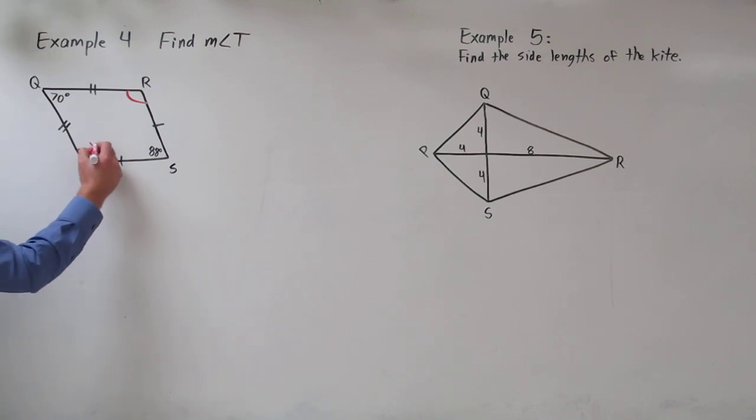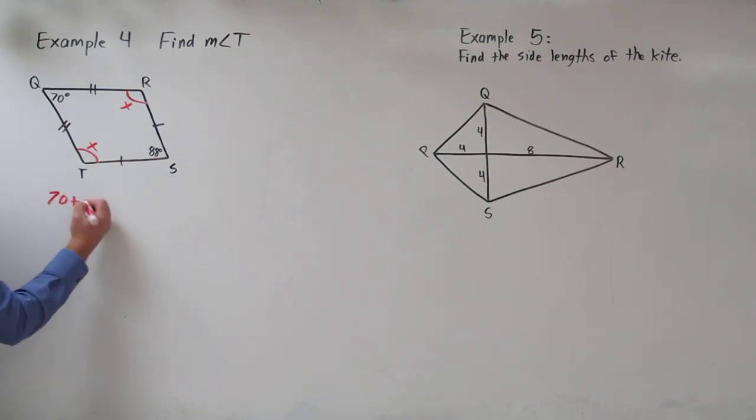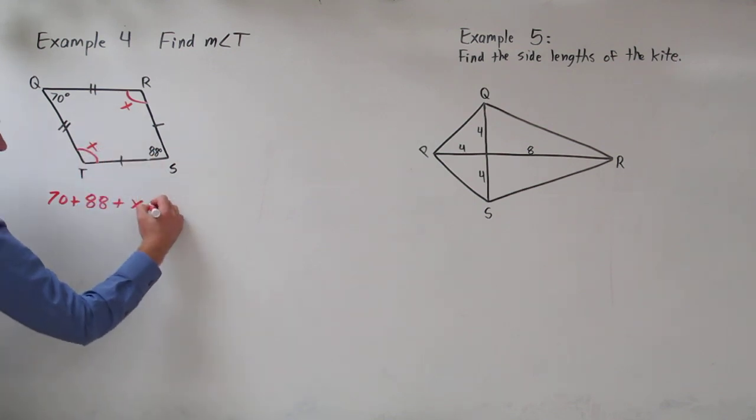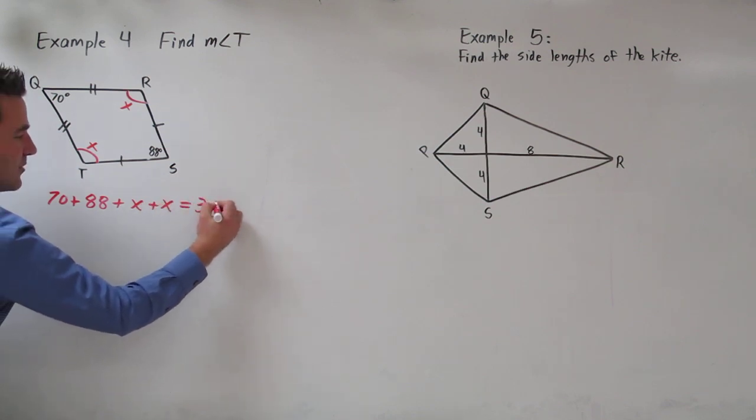So let's call this angle x and this angle x. We can use the same variable because they're congruent. And let's add all this together and set it equal to 360. 70 plus 88 plus x plus x all equals 360.